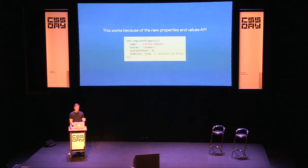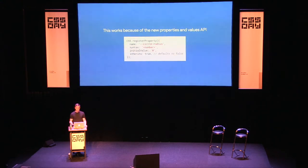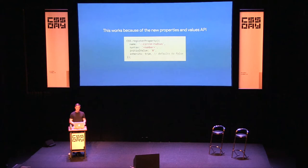There's one more required piece: `CSS.registerProperty()`. The reason you can't animate custom properties today is that the browser doesn't know their type — a custom property could be anything, just a token stream. You can't animate from `red` to `100%`. But when you register the property and specify its syntax — for example, the radius is a `<number>` and the other is a `<color>` — the browser knows how to animate it. This is super powerful: imagine a site where custom properties define the theme, and you can transition between light and dark modes just by changing a couple of properties.